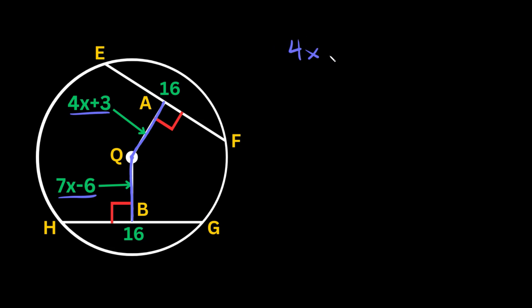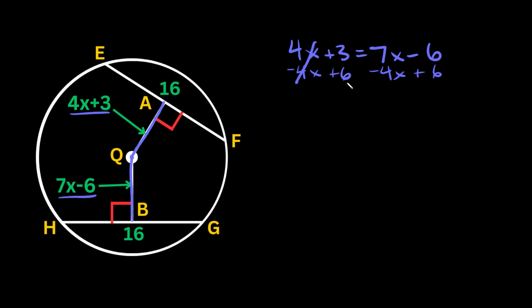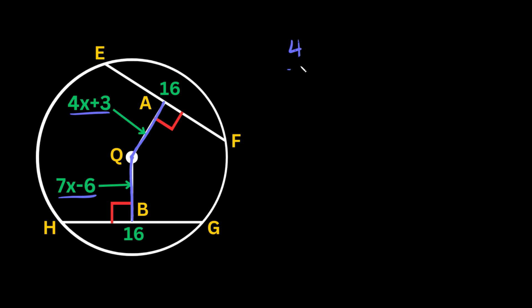So we set 4x plus 3 equal to 7x minus 6. Subtract 4x from both sides and add 6 to both sides. We get 9 equals 3x, so x equals 3.